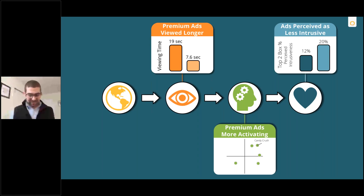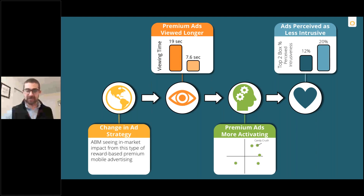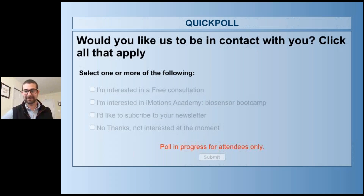We'll wrap up with a quick plug: iMotions is a software company providing a platform to take the different types of measures we've talked about today. We have a poll about ways to get in contact if you're interested in learning more about utilizing the iMotions software platform to bring biosensors into your research, consider additional biosensors beyond what you currently use, or explore our suite of support services. Thank you so much for your time, and I'll bring it back to Olivia to wrap us up.